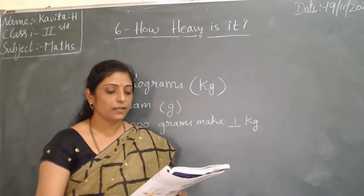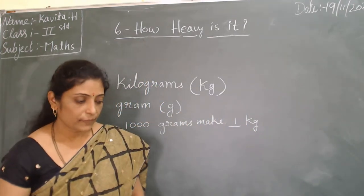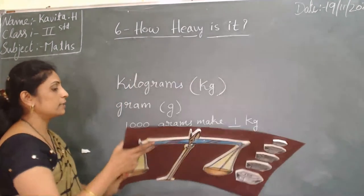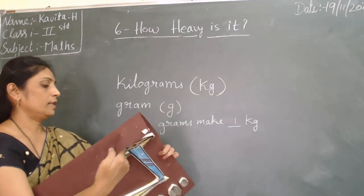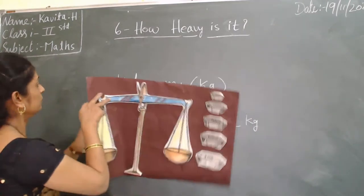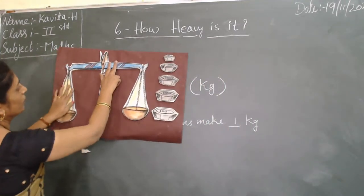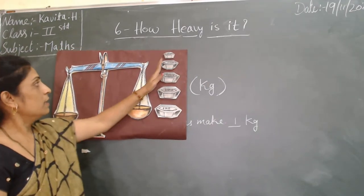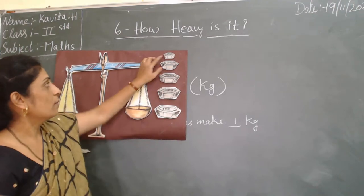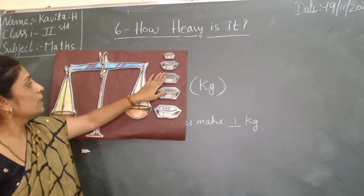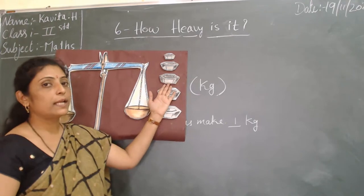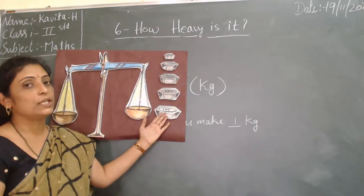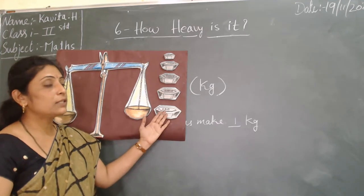KG means kilogram, G means gram. These are the two fixed measures of mass. In selling vegetables, fruits, etc., we use stones of 1 kg, 2 kg, 50 grams, 100 grams, 200 grams, 250 grams, and 500 grams. One thousand grams make 1 kg.